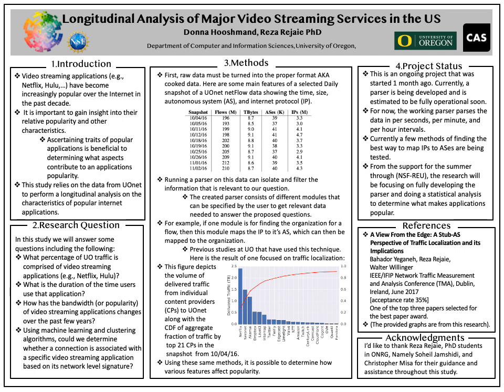This might seem like a seemingly easy question, and it might be for some cases. For example, Netflix offers limited services and if the source IP of a flow is associated with Netflix, chances are it's a video. But with the growth of video streaming applications and the increase in types of video streaming applications, the line between video and not video has become very blurry, which is where machine learning can help us.